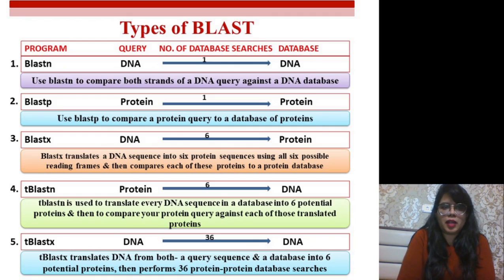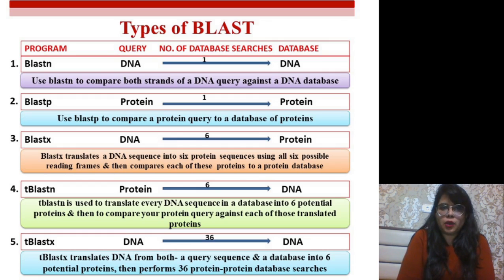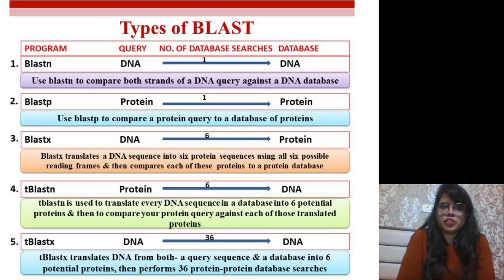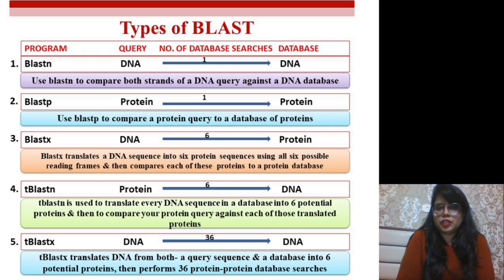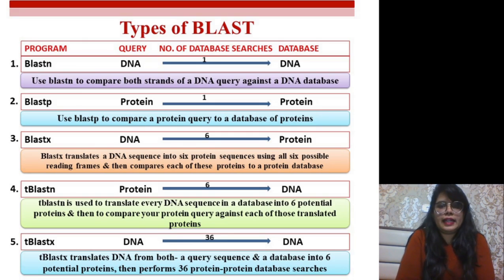There are five basic BLAST programs: BLASTn, BLASTp, BLASTx, tBLASTn, and tBLASTx. BLASTn is nucleotide BLAST — you provide a DNA sequence (such as AGCT) as a query, and the program searches against the DNA database only. It takes your query DNA and searches against all DNA submitted in the database, returning results called hits. You can compare both strands of the DNA query against a DNA database. The number of searches performed is one.